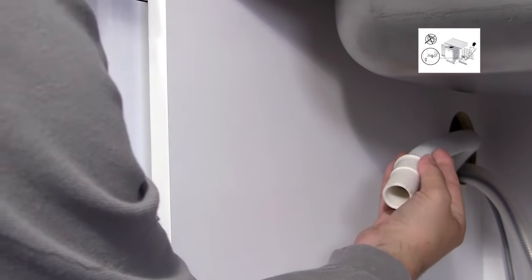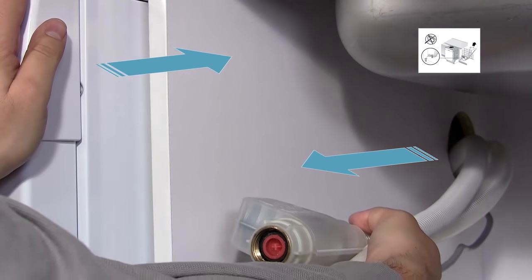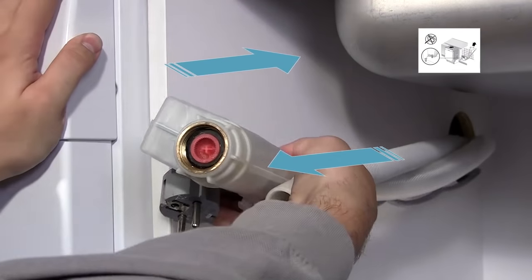When replacing the dishwasher, pull on the hoses as you push the dishwasher back into position so that they are not trapped, because this will restrict the water flow.